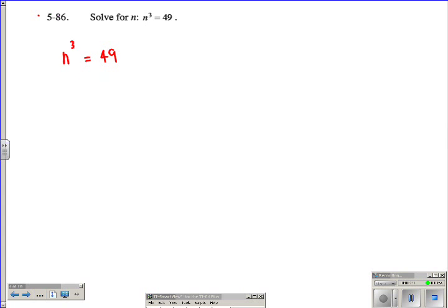The first thing we can look at here is just solving it by undoing our steps. So if we were cubing n, that means we could take the cubed root, but if we do that to this side of the equation, we're also going to have to do it to this side.